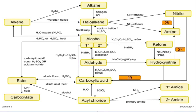Number twenty-seven: hydroxynitrile to amine — react with hydrogen and a nickel catalyst. Number twenty-eight: nitrile to amine — hydrogen and a nickel catalyst. Finally, number twenty-nine: hydroxynitrile or nitrile to carboxylic acid — you would heat it with water and hydrochloric acid.